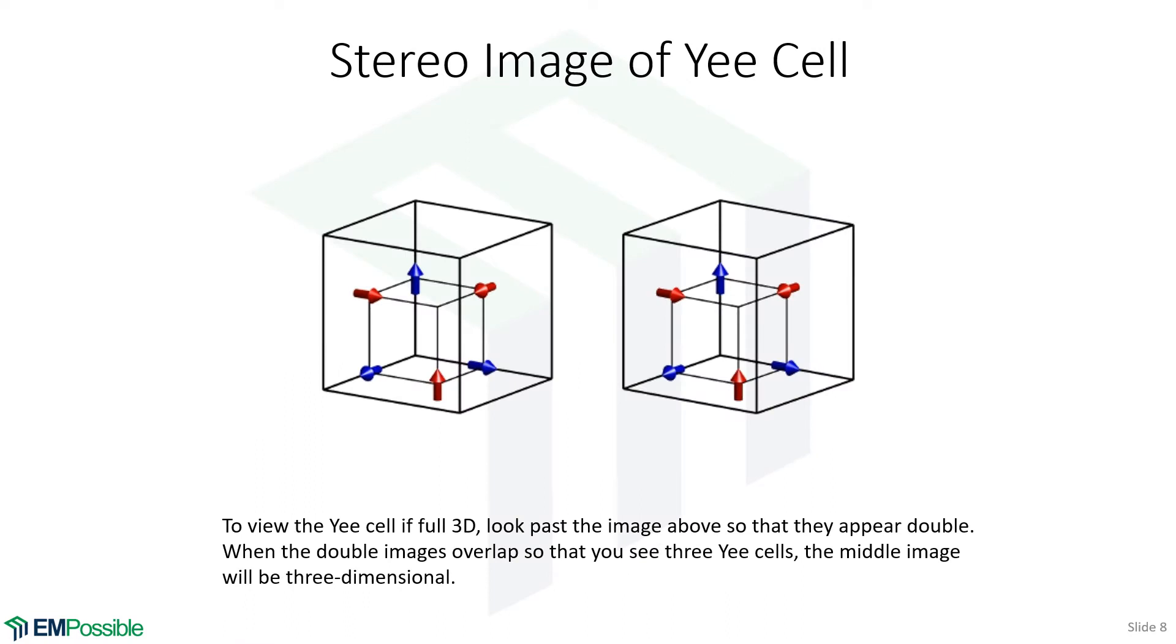This is a stereo image of the Yee cell. If you print these out onto paper, this will be about the right size where you can look at this with your eyes. If you look past this and each of those two images goes double, and one double from each lies on top of each other, that middle double image will be three-dimensional.